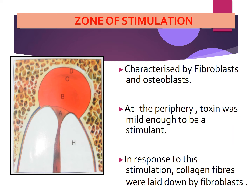The last zone is the zone of stimulation, characterized by fibroblasts and osteoblasts, which are mainly the repair cells. At the periphery the toxins are very mild and act as a stimulant. In response to this stimulation we find collagen fibers laid down by the fibroblasts. Looking at the Fish zones carefully, the central zone — site A, zone of infection — has more microorganisms and neutrophils with a lot of destruction occurring. As we move from the central zone outward, the toxins become more and more dilute and it becomes more reparatory than destructive.